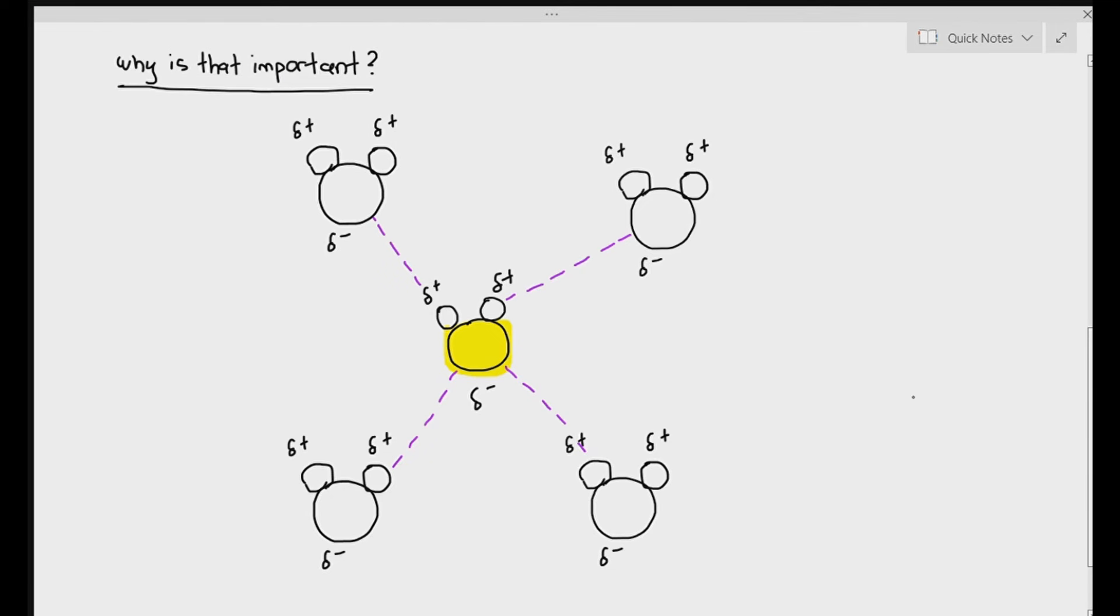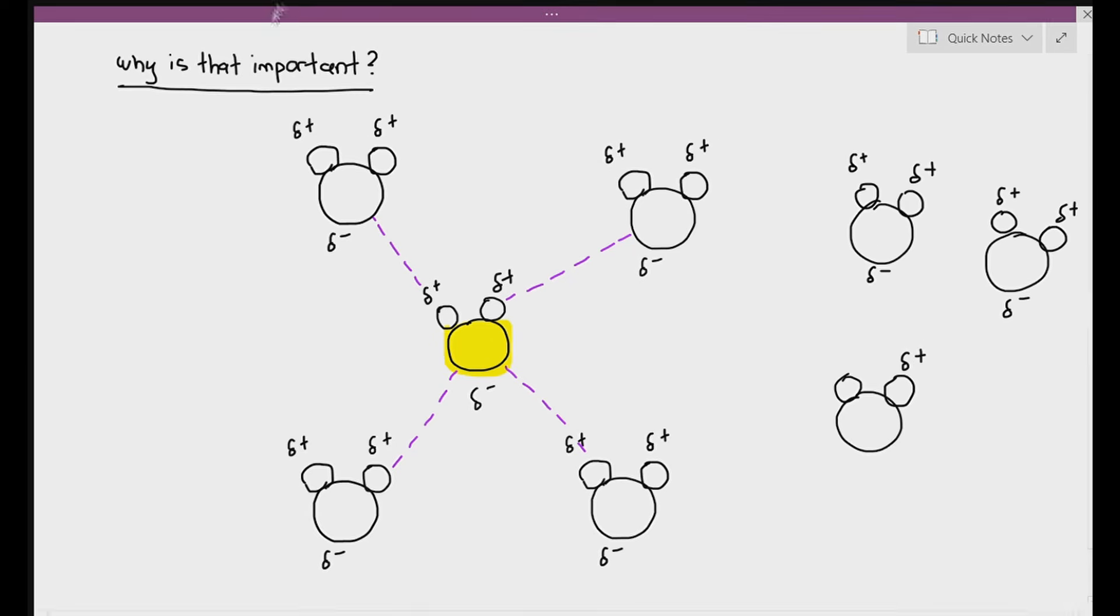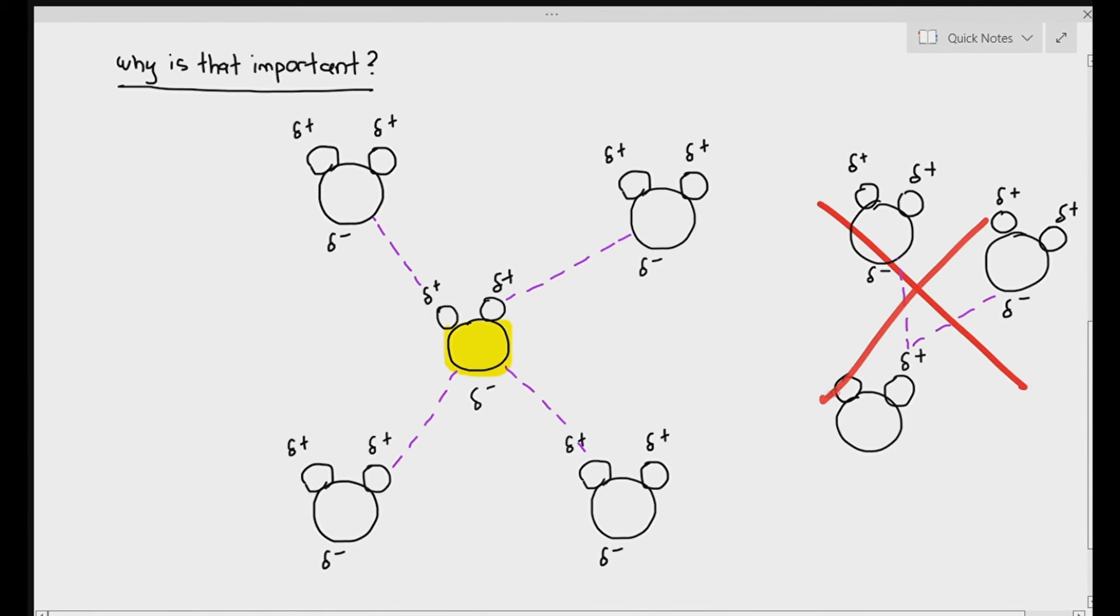If you look at the highlighted oxygen atom, there are two hydrogen bonds - one going towards the lower left, one going towards the lower right. This is due to the size of the oxygen atom. Hydrogen atoms can't do that. Hydrogen atoms can only form one hydrogen bond due to its size. A lot of times students will assume that hydrogen can also form two hydrogen bonds. It does not. It's not able to form two hydrogen bonds.